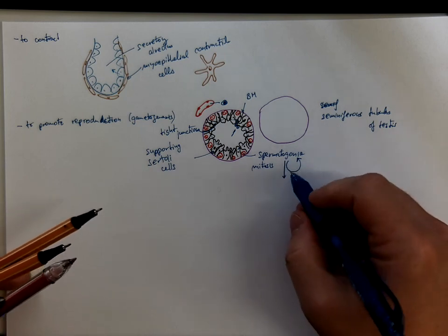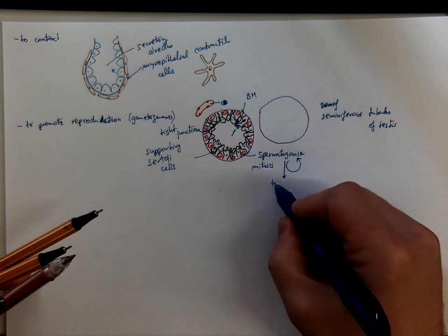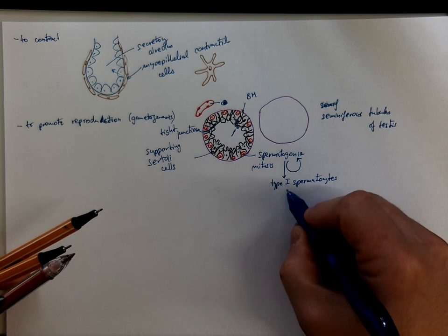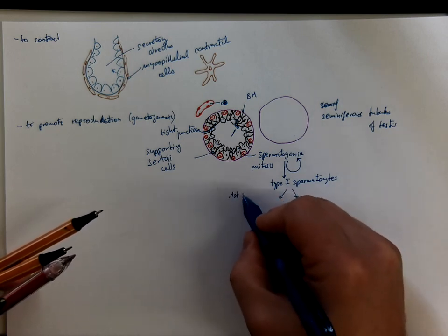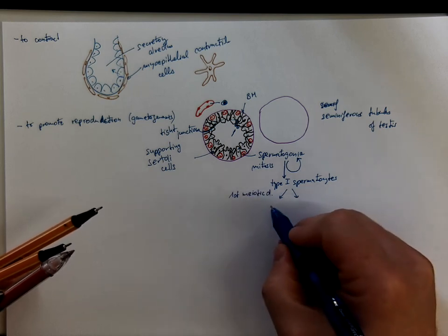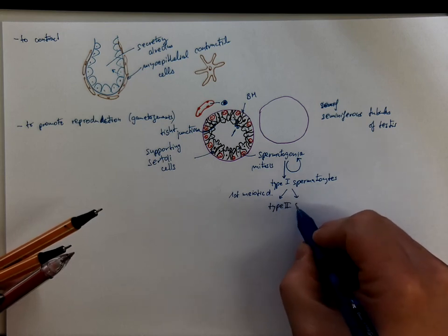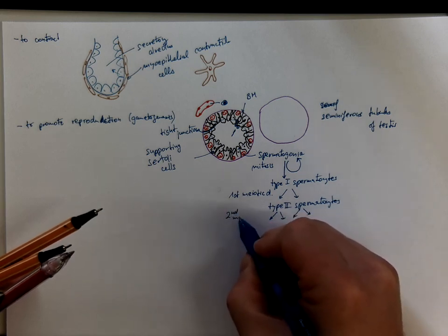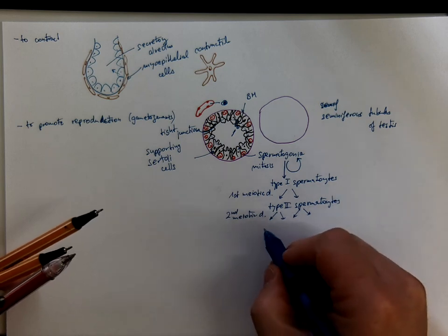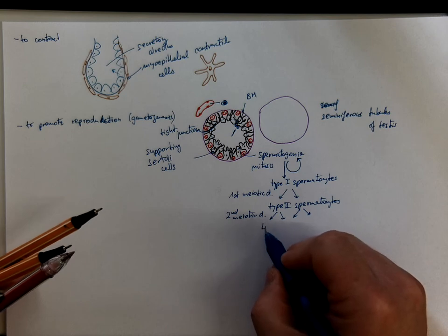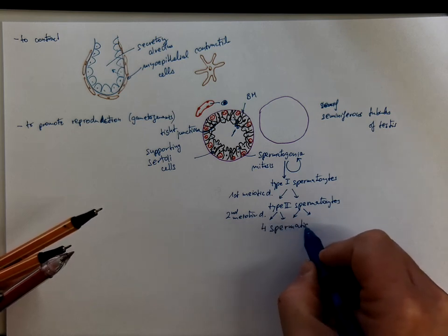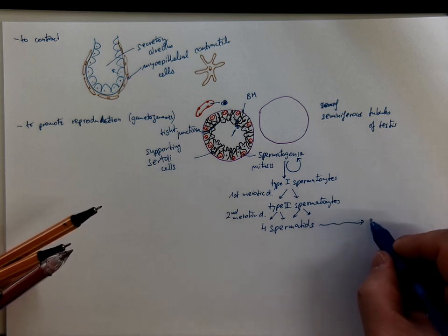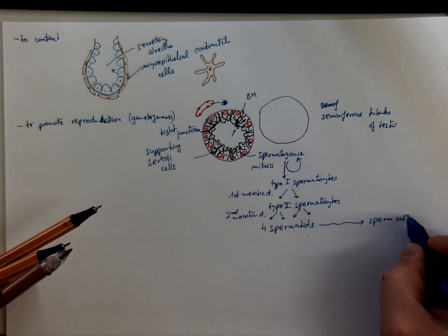And some fraction of these differentiates into type 1 spermatocytes that undergo the first meiotic division. The result of this is type 2 spermatocytes that undergo the second meiotic division. And the outcome of that is tetrad, four cells called spermatids which are not mature sperm cells yet. They need to undergo differentiation process, spermiohistogenesis, to form mature sperm cells or spermatozoa.